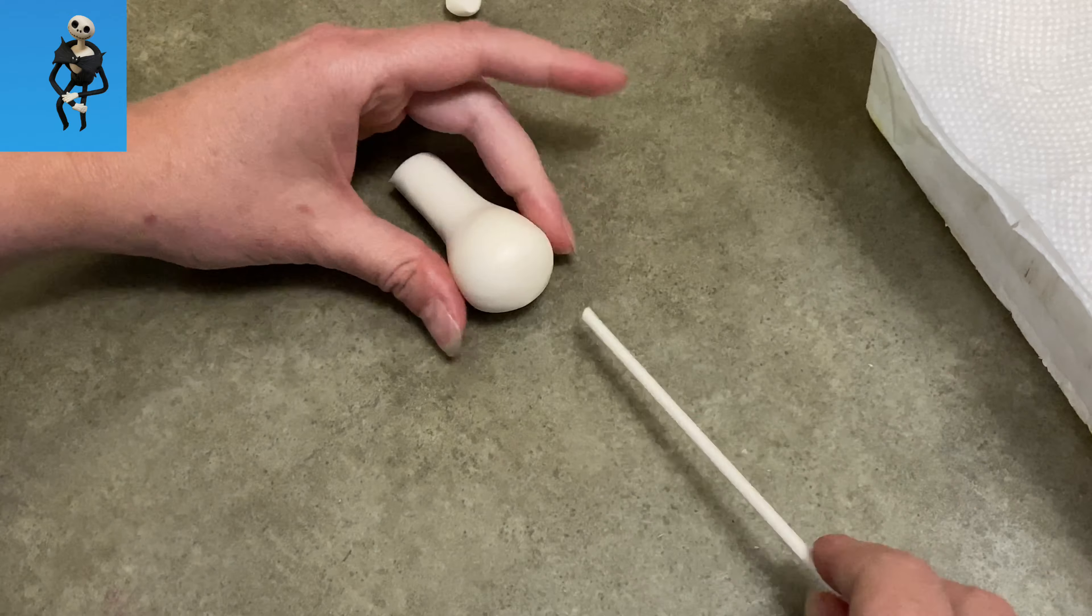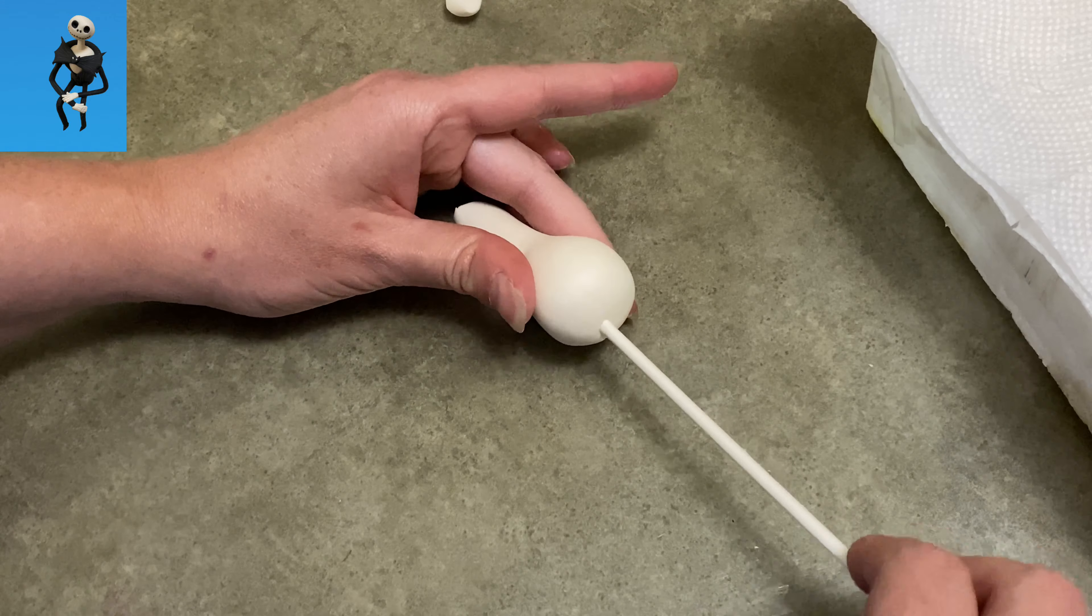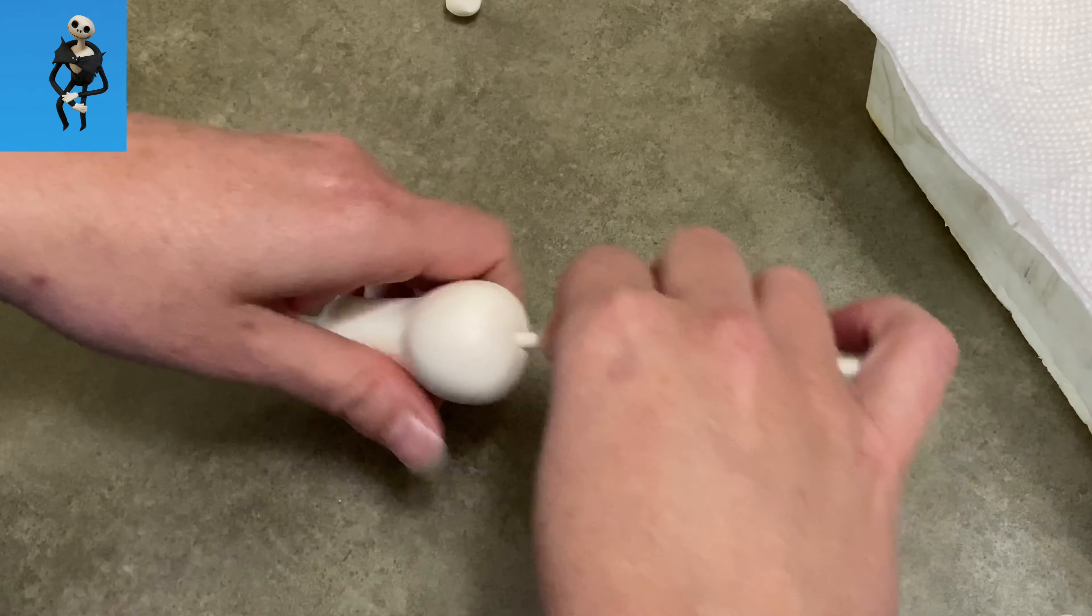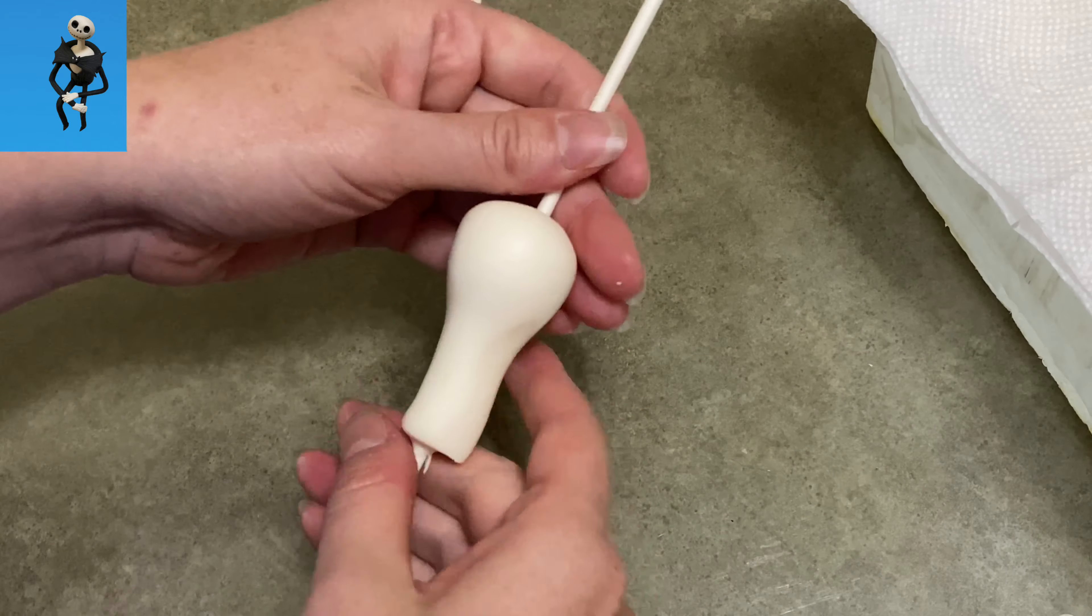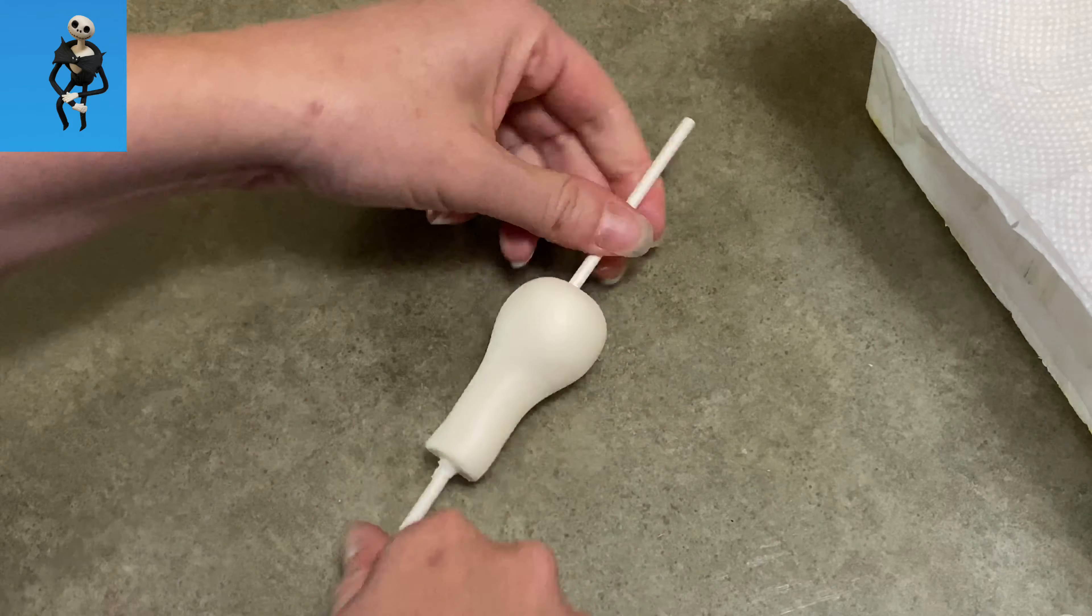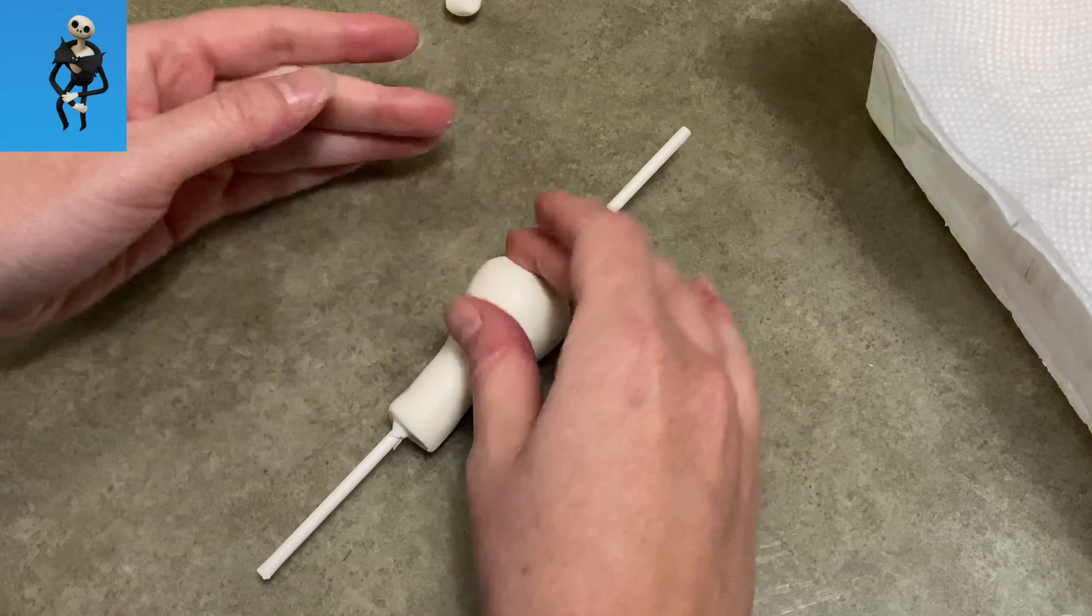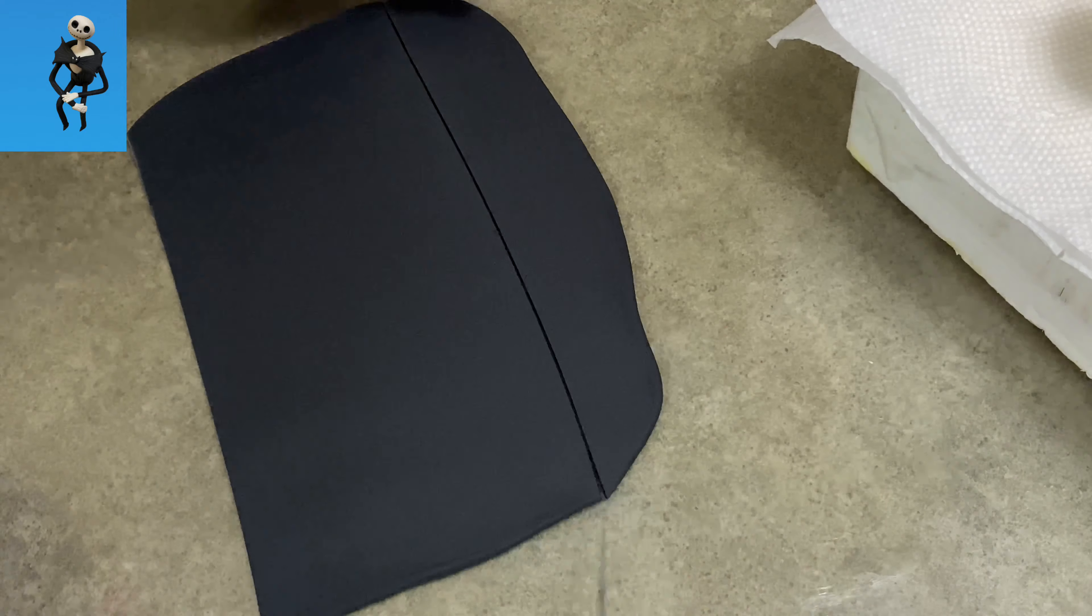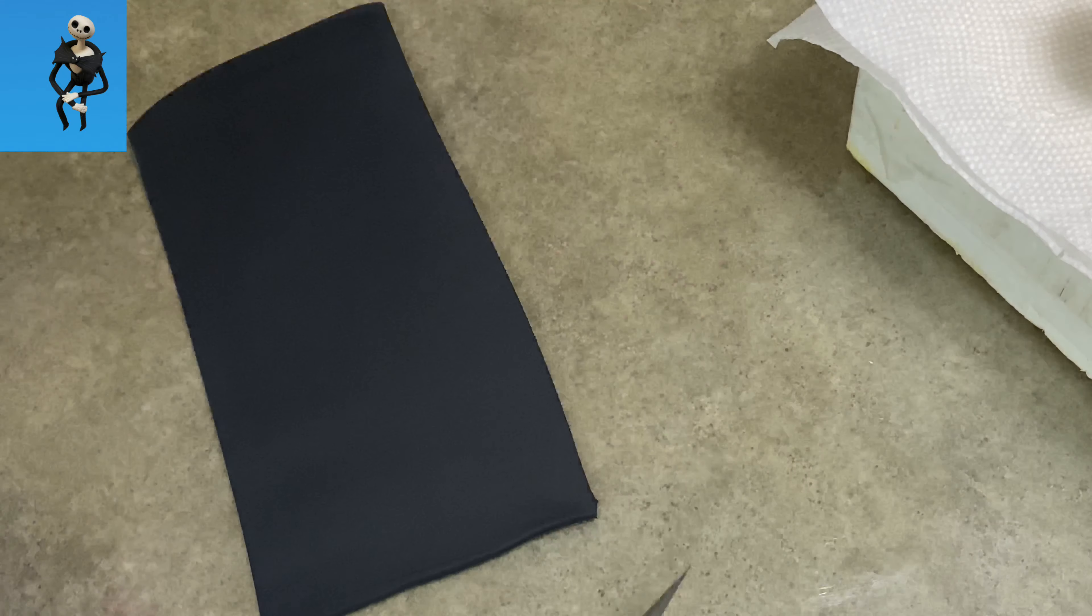I'm going to start with some white gum paste for his body and basically make a light bulb. As you can see, I have him real skinny at the bottom, nice flare out at the top, and I stuck a lollipop stick down the center. These are 8-inch lollipop sticks, by the way. It comes into play later when I make his arms and legs, so just keep it in mind.